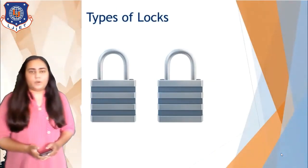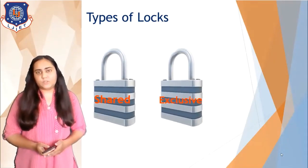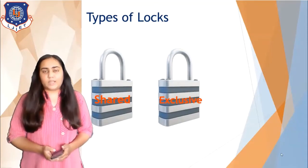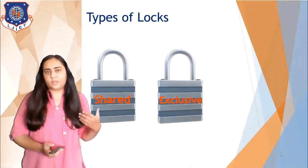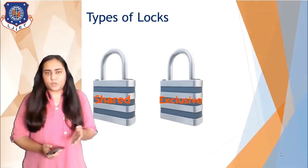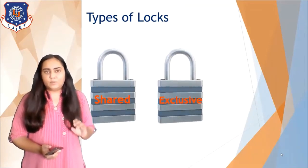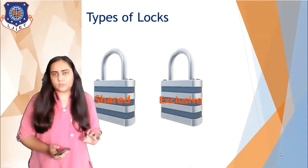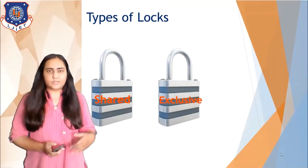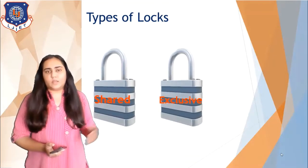In a lock-based protocol there are two types of locks. The first type is known as a shared lock and the other is known as an exclusive lock. A shared lock is a lock that can be shared by multiple transactions. If a transaction only wants to read the data item but does not want to perform any changes, then that transaction can obtain a shared lock. To obtain a shared lock, it doesn't matter if another transaction also holds a shared lock on the same data item.